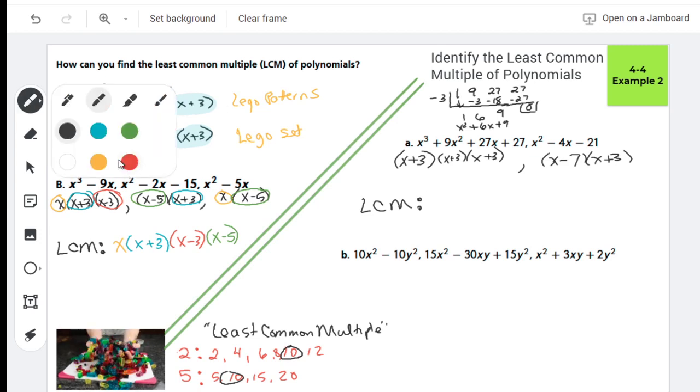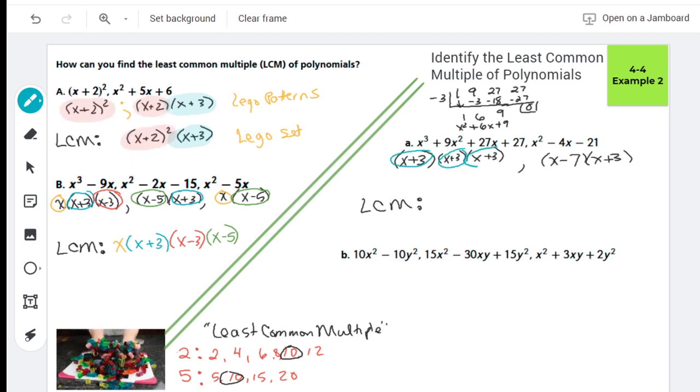So with that effort, now we can identify our LCM. From my first expression, I know that I need x plus 3, and since I have three of them in that first expression, I'm gonna have x plus 3 cubed. And then in my second expression, I have an x minus 7, so I need to include that in my LCM here.